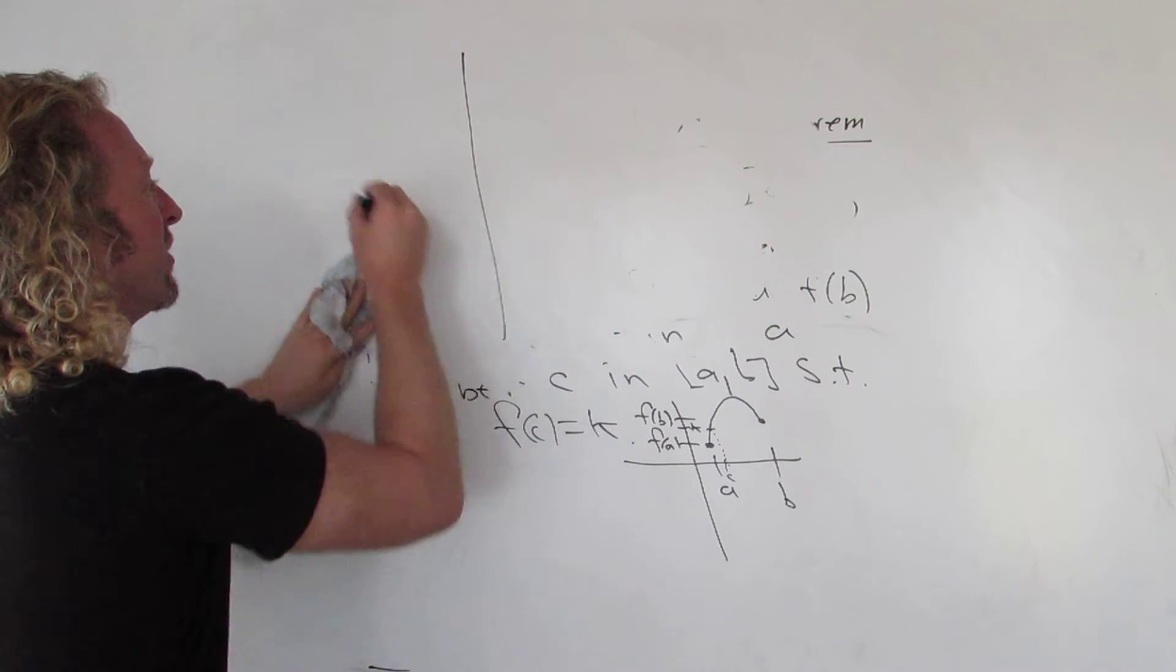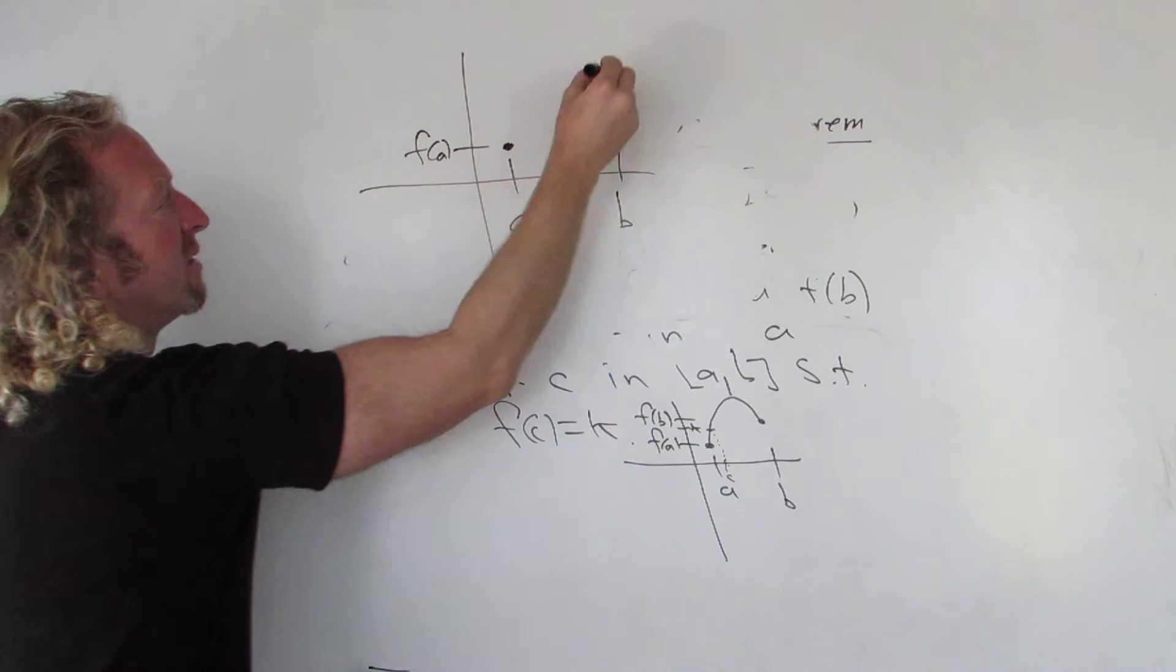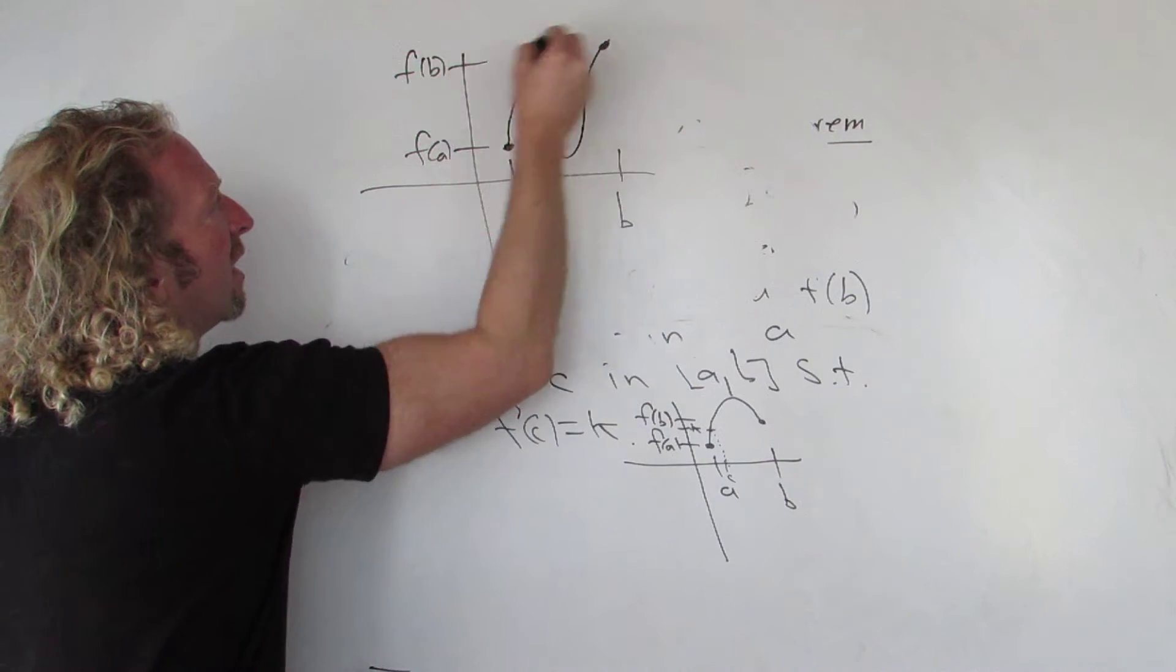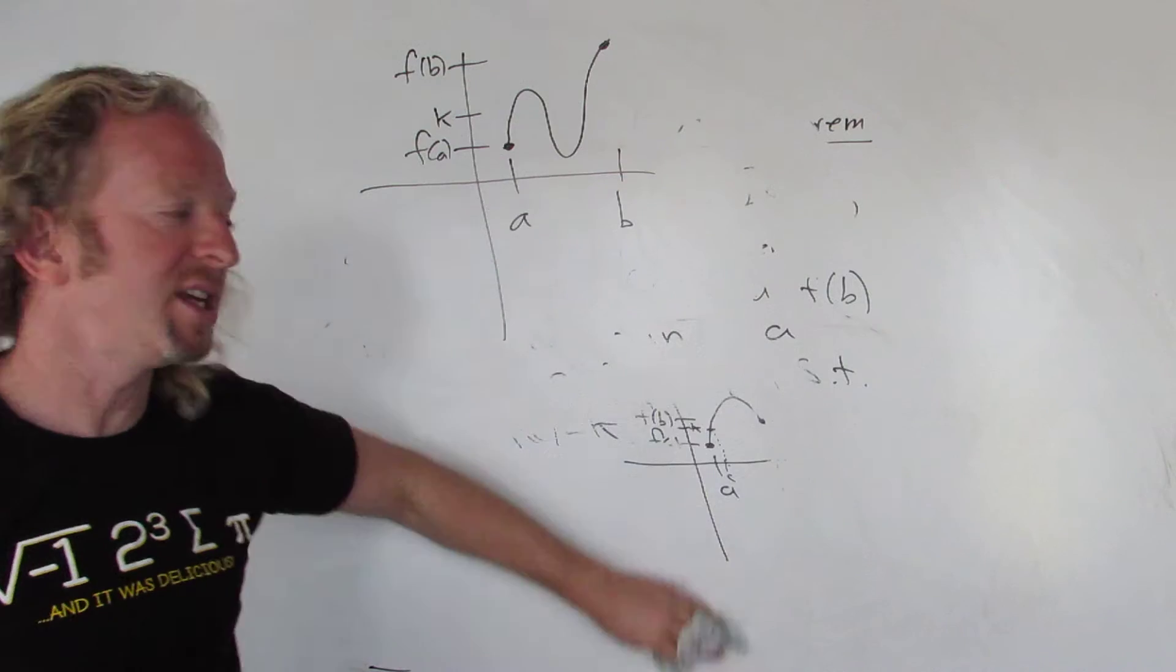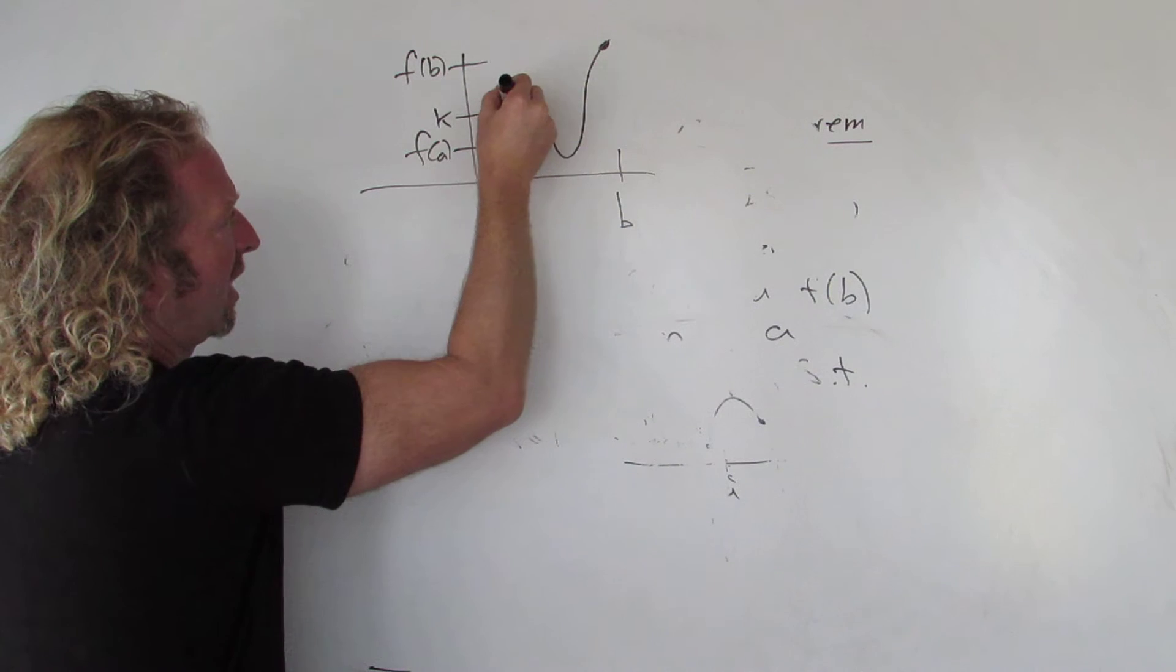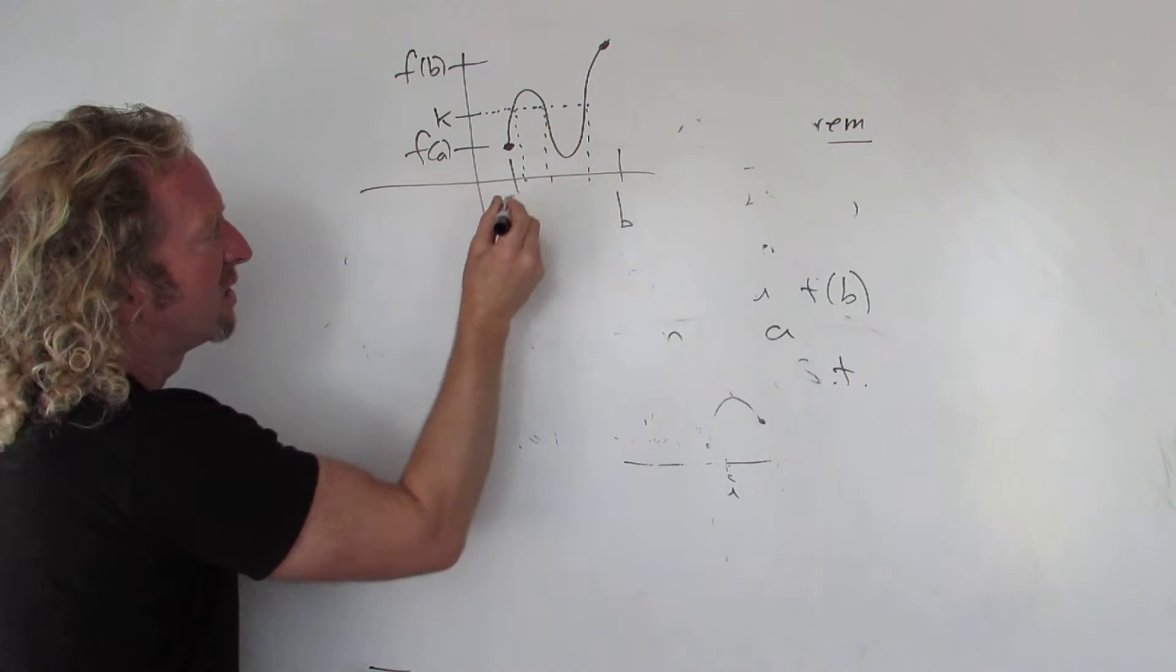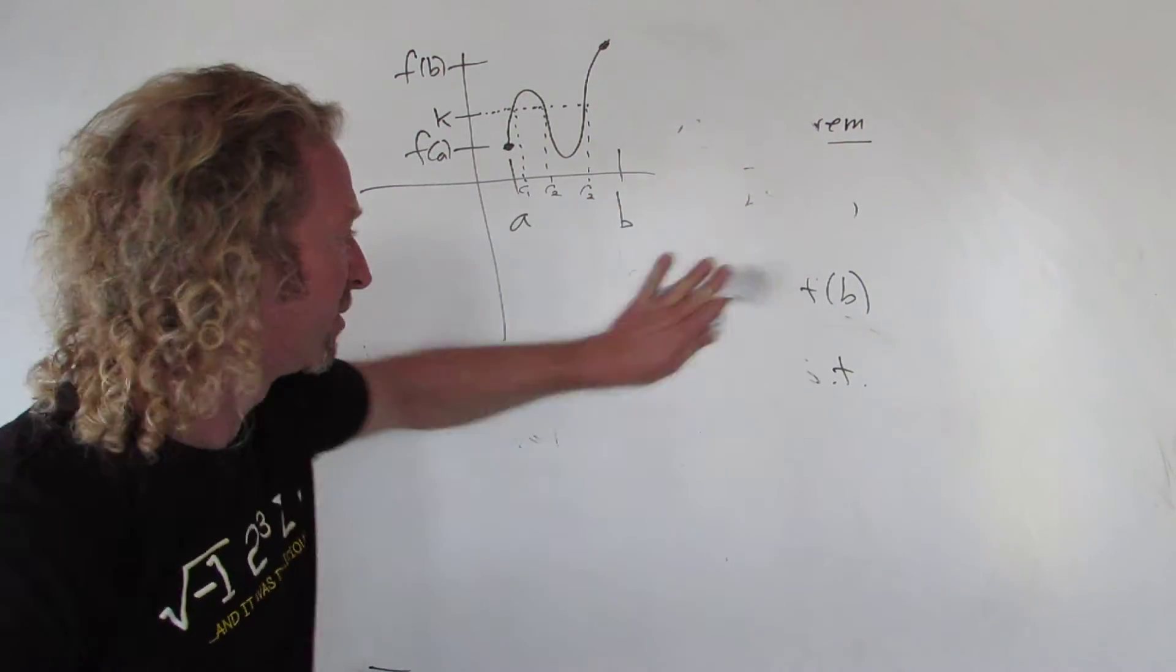Let me do a bigger picture so you can see it better. So let's draw it again up here. Here's A, here's B. And let's say here's F(A), and then here's maybe way up here F(B). So IVT says that for any number between F(A) and F(B), say the number here K, you can find a value of C such that F(C) equals K. Well, in this case, here's K. So in this case, there's three values of C - three distinct values of C. I'll call them C1, C2, C3, such that F of each of these values gives you K.